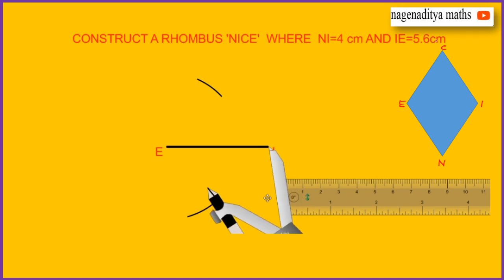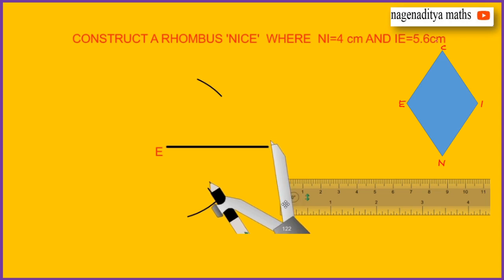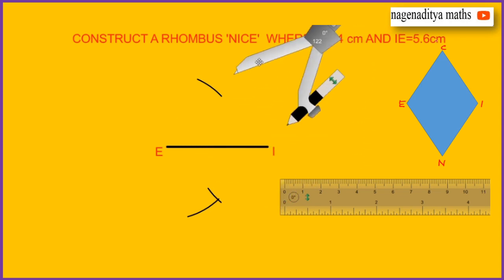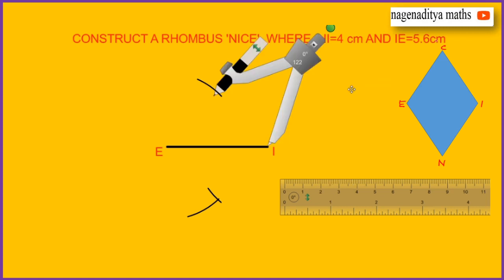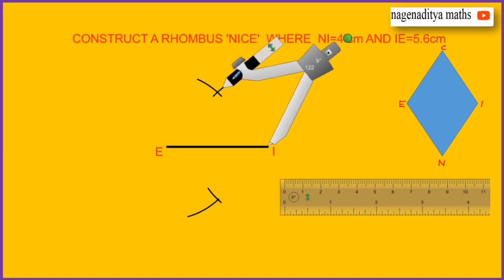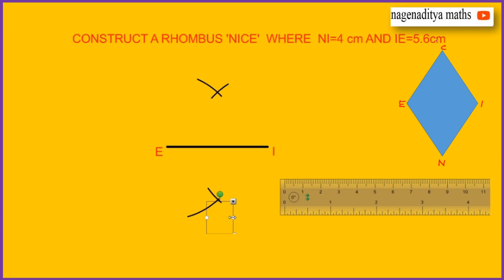With the compass set to 4 centimeters, draw the intersecting arcs. The intersection points are N and C.